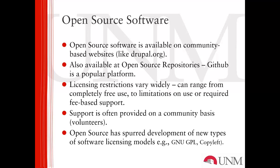Development and support of open source software is often provided on a community basis. Again, using Drupal as an example, the Drupal initiative relies on volunteer community developers for not only the development of the core Drupal software server application, but also for any of the plugins or add-ons that are available for Drupal. Open source software has also spurred a variety of other licensing models — the GNU GPL license or copyleft are both examples of those types of licenses.